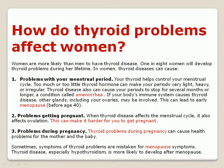If the body's immune system causes thyroid disease, other glands including the ovaries may be involved, which can lead to early menopause before age 40. Thyroid disease affecting the menstrual cycle also affects ovulation, making it harder to get pregnant. Thyroid problems during pregnancy can cause health problems for both the mother and the baby. Sometimes symptoms of thyroid problems are mistaken for menopause symptoms, and thyroid disease, especially hypothyroidism, is more likely to develop after menopause.